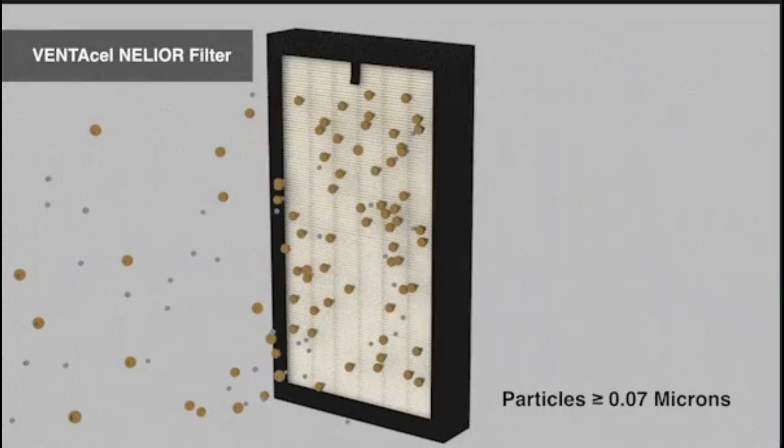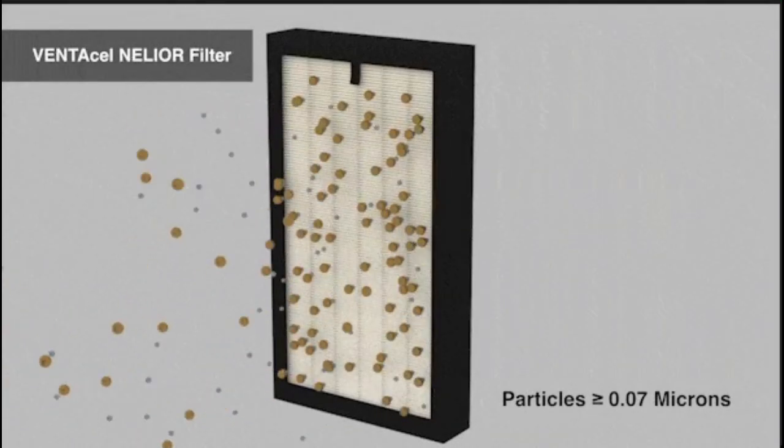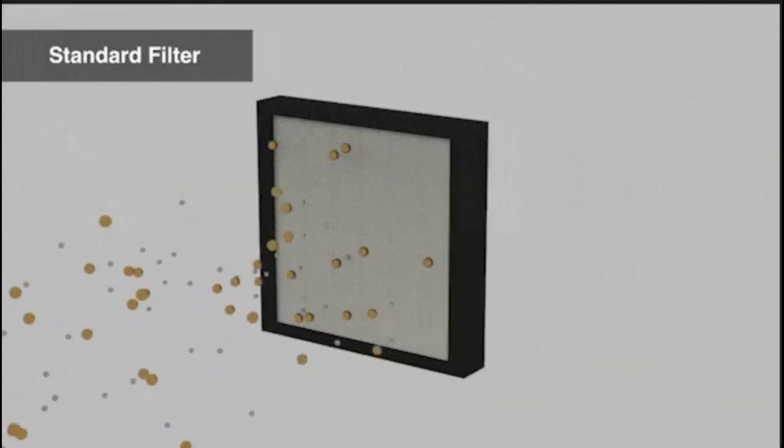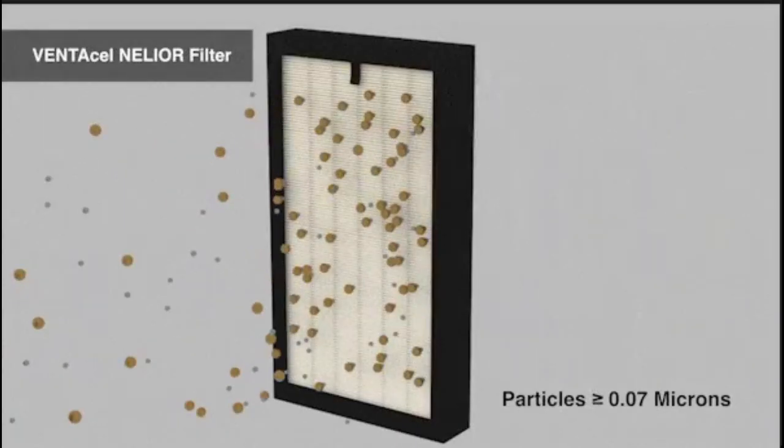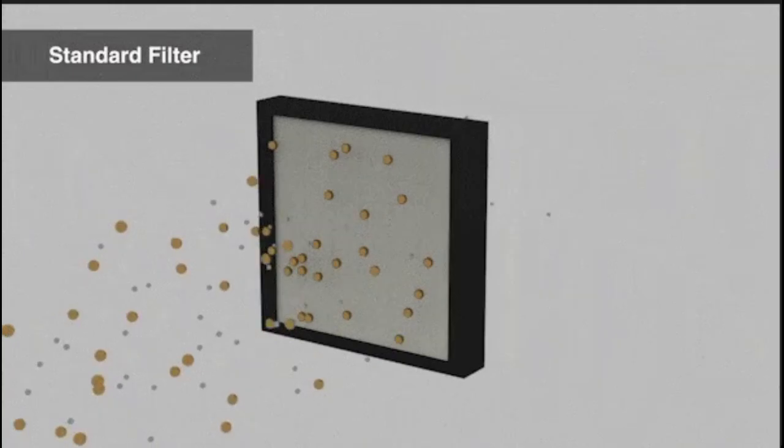Filters in the AHU clean the incoming air by removing dust, allergens, and other particulate matter. These filters help improve indoor air quality by capturing contaminants before the air is distributed into the building.